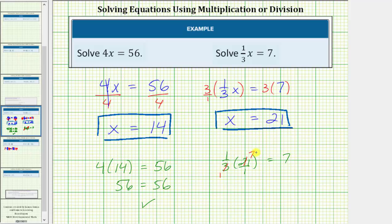3 and 21 share a common factor of 3. There's 1 3 in 3 and 7 3s in 21. Notice the left side is now just 1 times 7, which equals 7. So we have 7 equals 7, which is true. Once again, verifying our solution is correct.